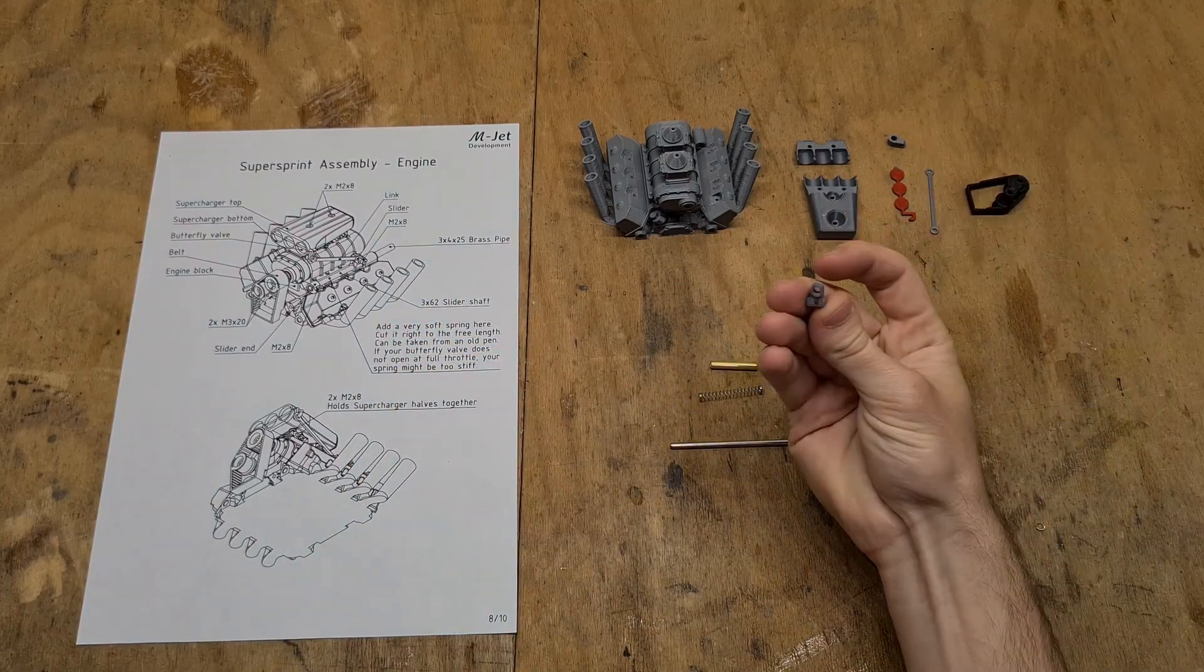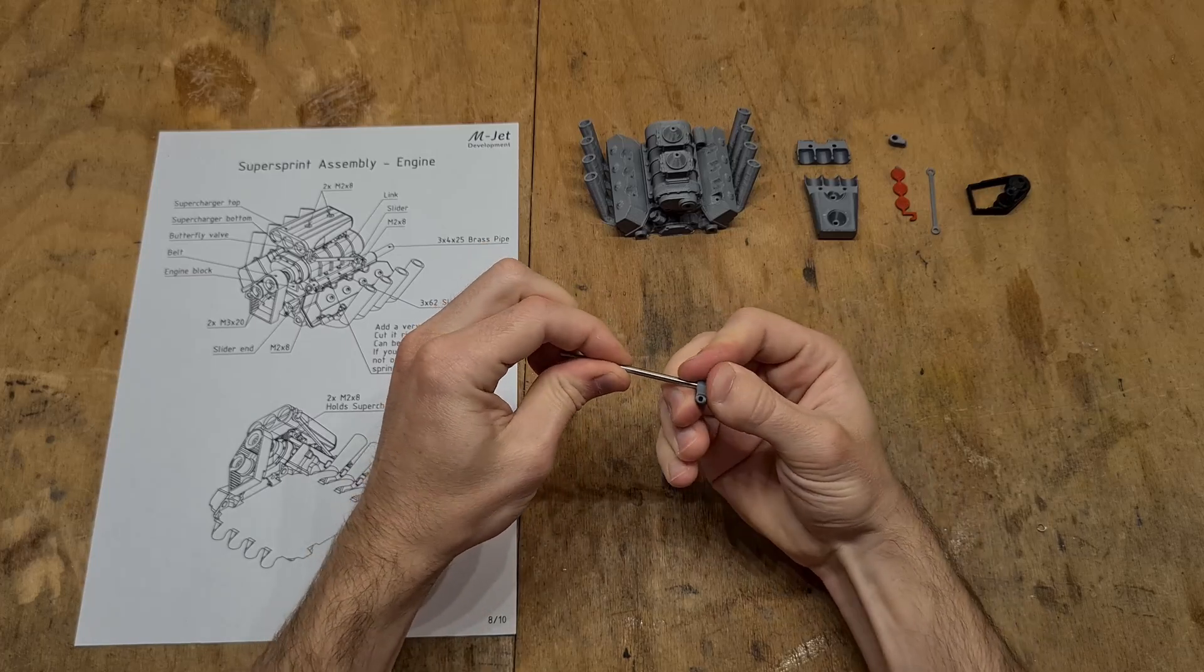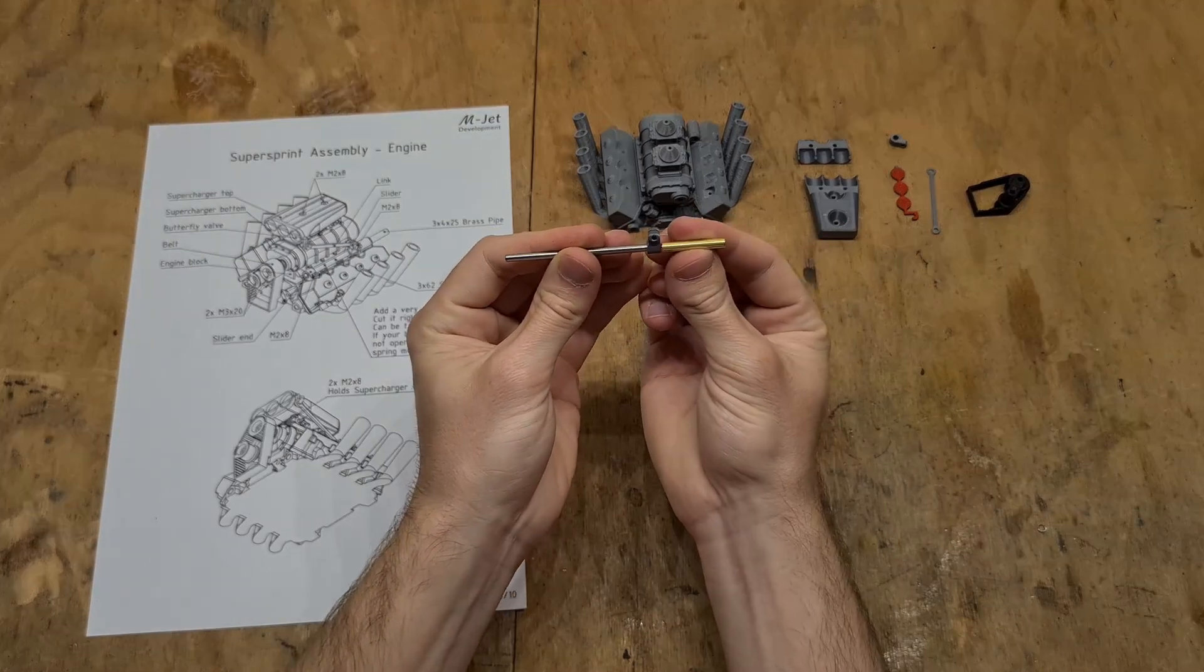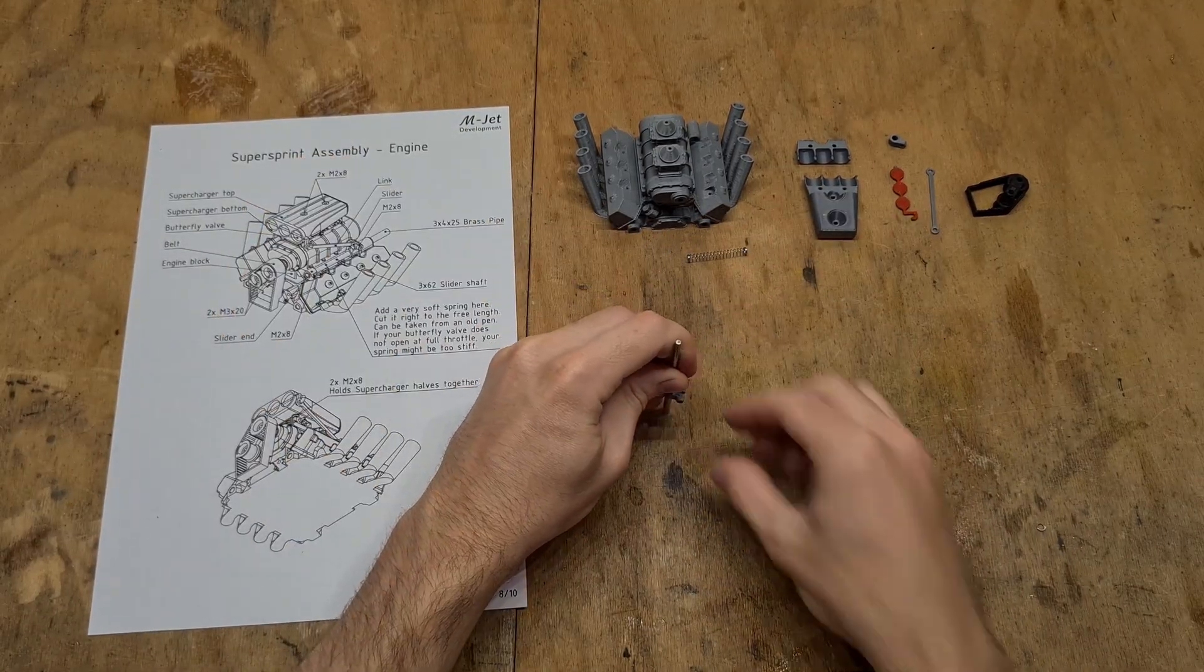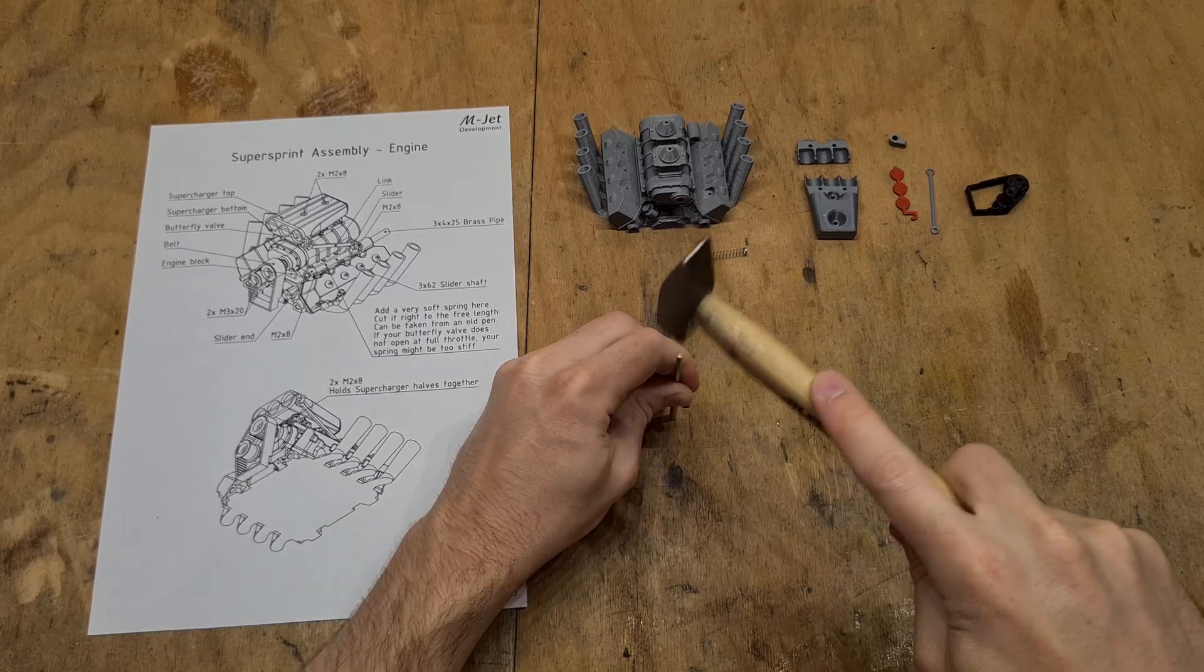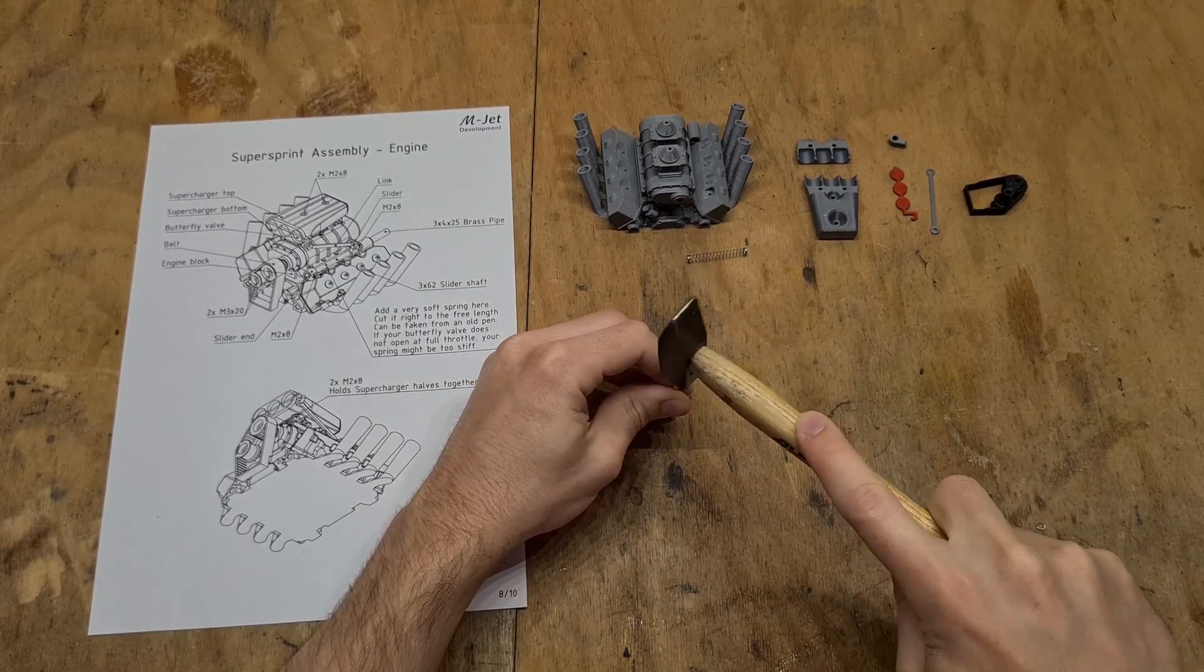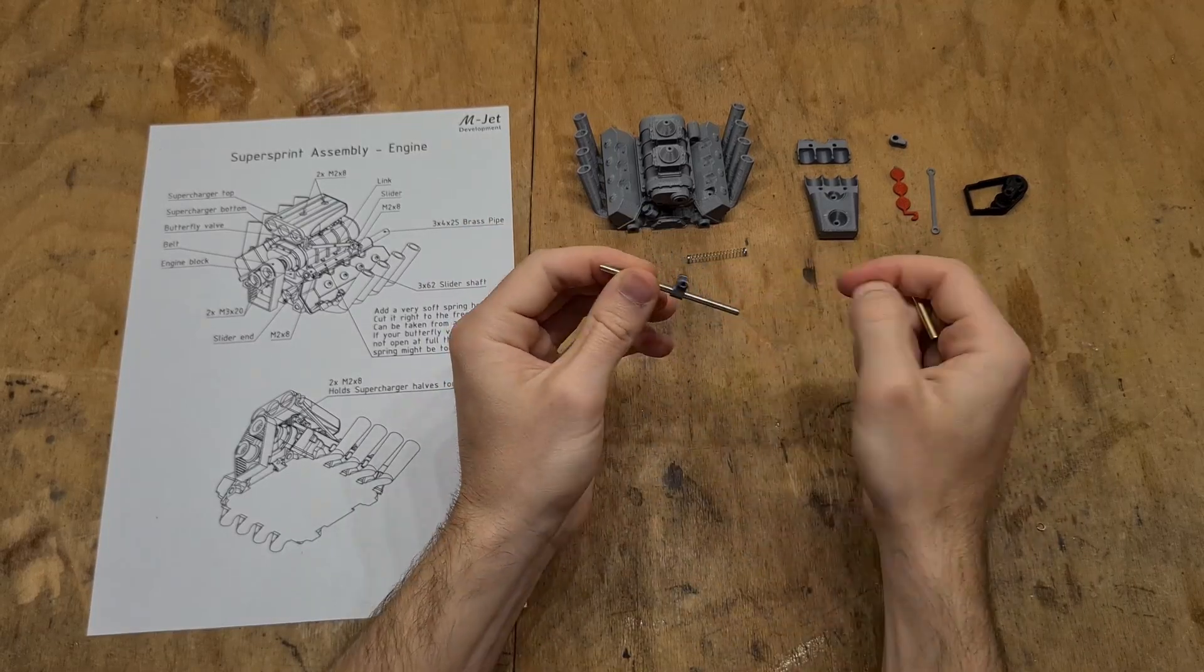Let's start the assembly by pressfitting the slider shaft into the printed slider. Here I am using the brass tube as a spacer to achieve the correct position of the slider on the shaft. This is the correct position so that the brass tube completely covers the shaft.